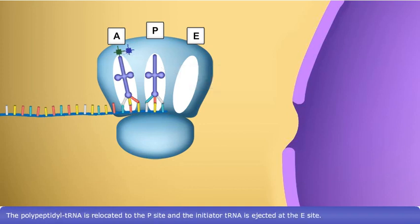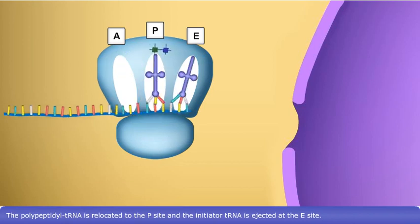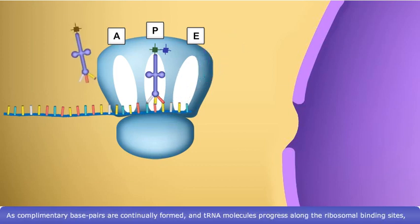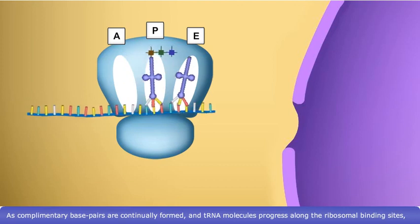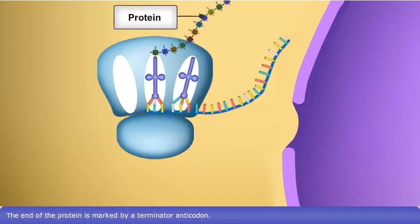The polypeptidal tRNA is relocated to the P site and the initiator tRNA is ejected at the E site. As complementary base pairs are continually formed and tRNA molecules progress along the ribosomal binding sites, the polypeptide chain grows, ultimately forming a protein.